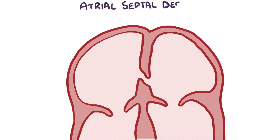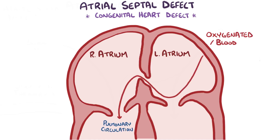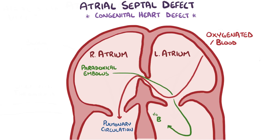As a quick recap: an atrial septal defect is a congenital heart defect where the septum between the right and left atrium doesn't close up all the way and remains open after birth. This causes oxygenated blood to go into pulmonary circulation. One complication from this condition is a paradoxical embolus, which crosses from the right to left side via the atrial septal defect.